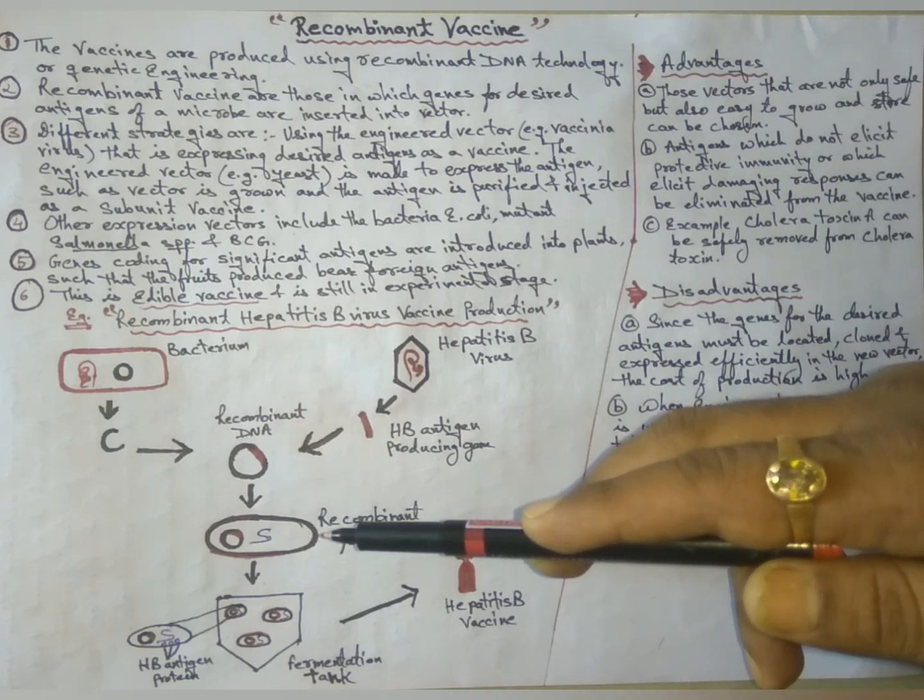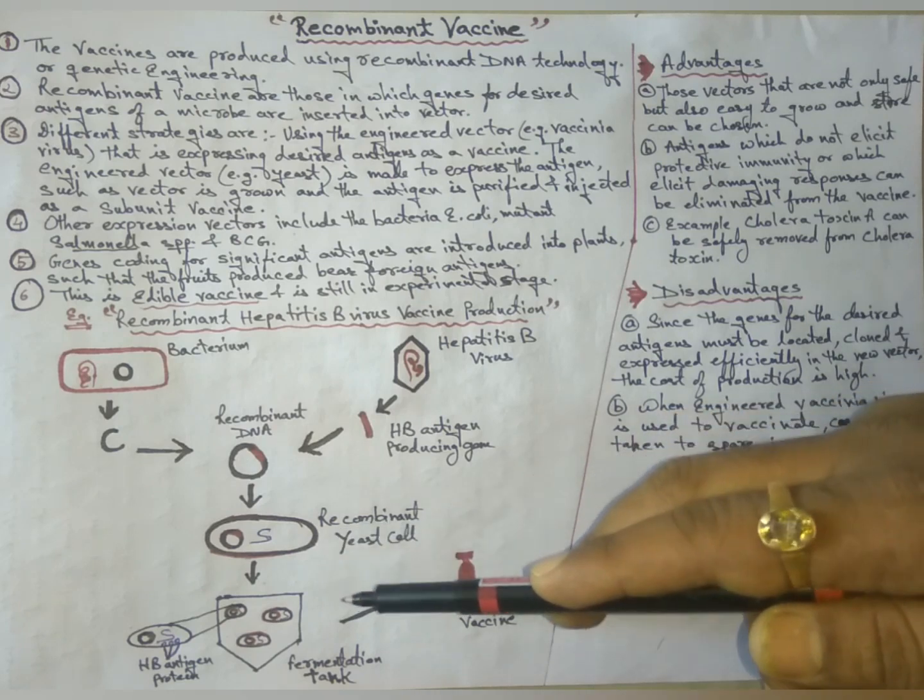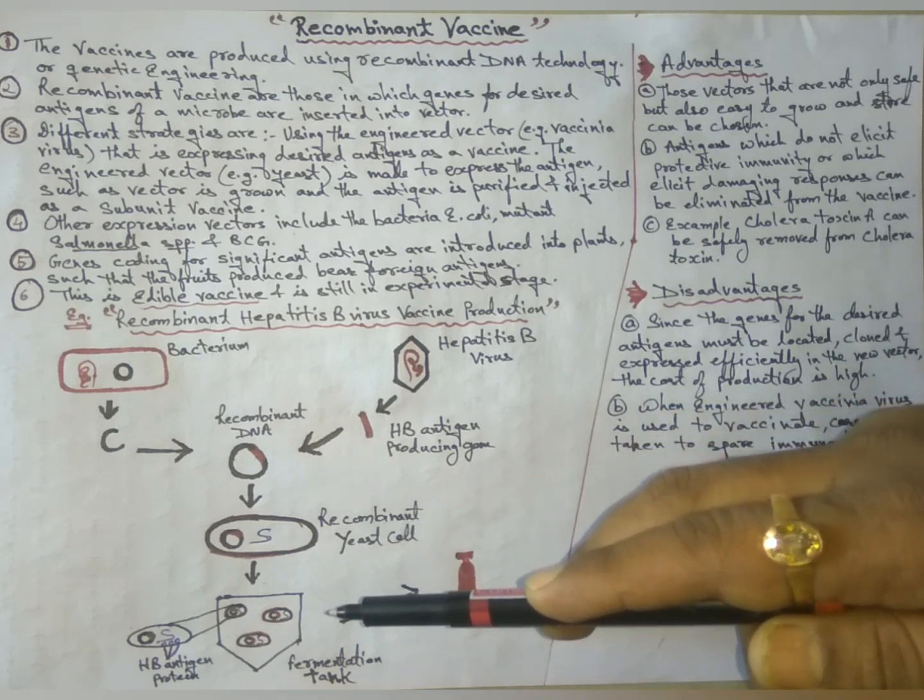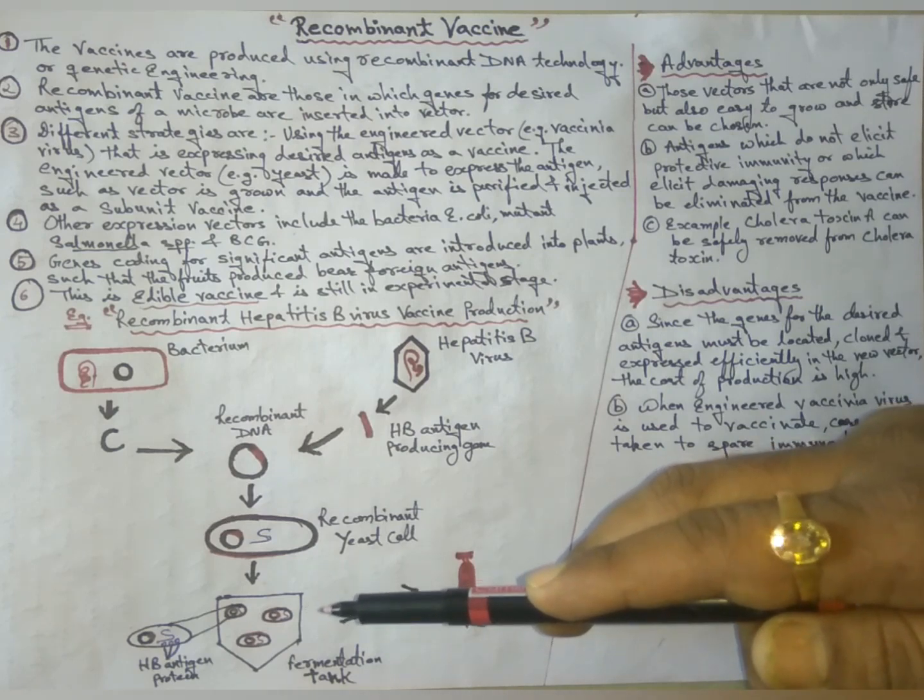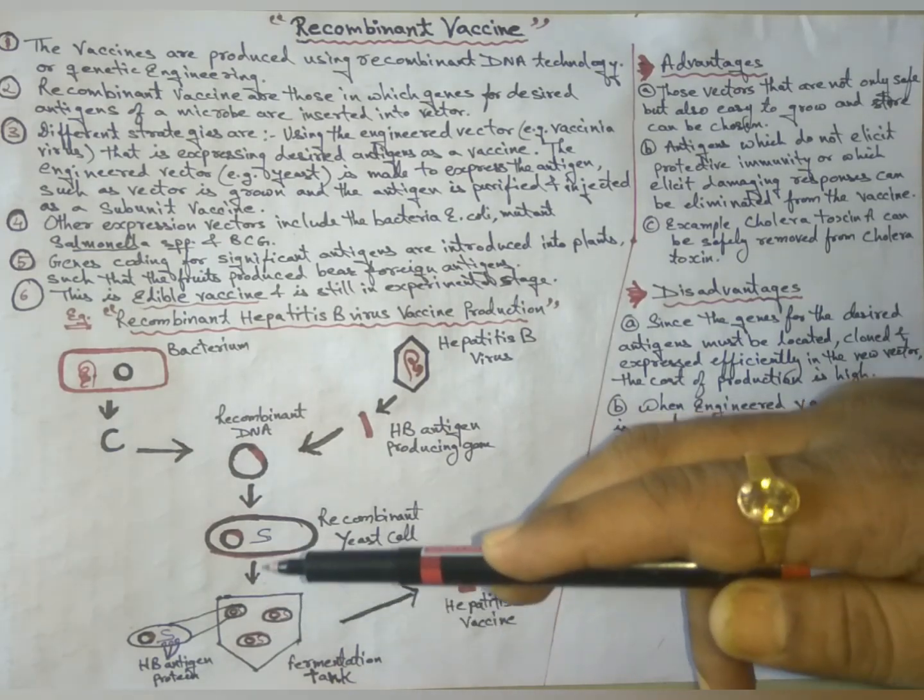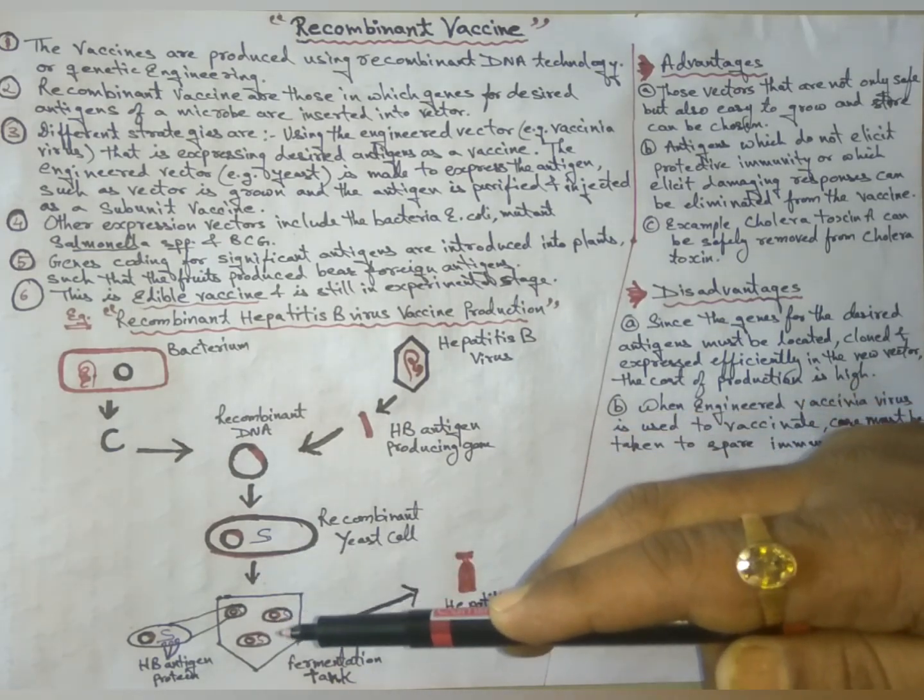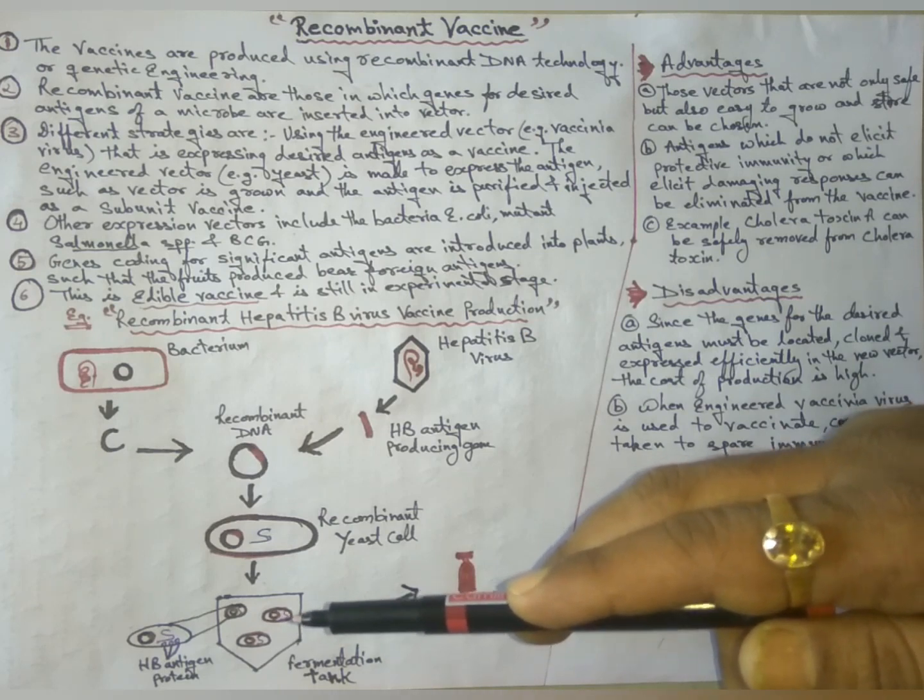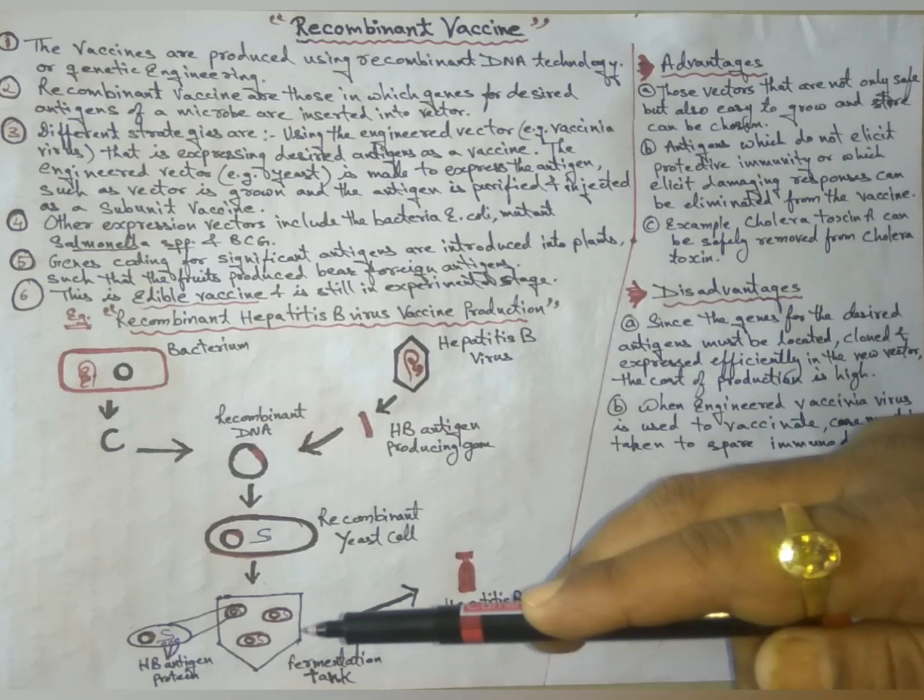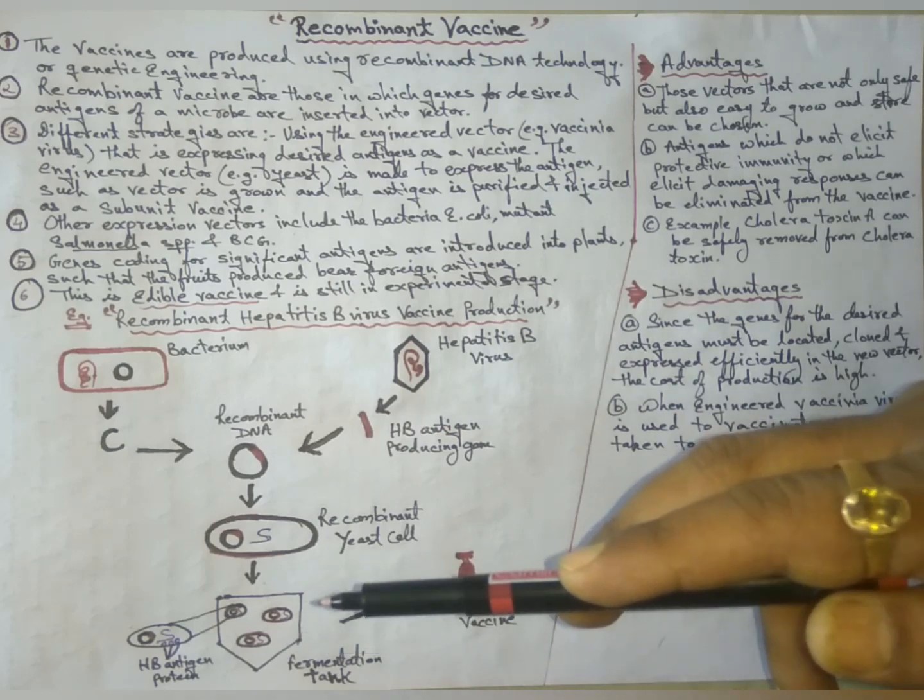The recombinant yeast cells are introduced into the fermentation tank, which involves the growth of yeast cells on a complex fermentation medium. The hepatitis B antigen proteins are released from the yeast cells by cell disruption and are purified by a series of chemical and physical methods.